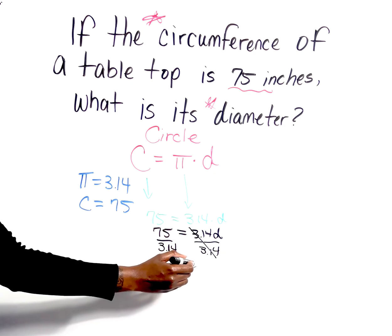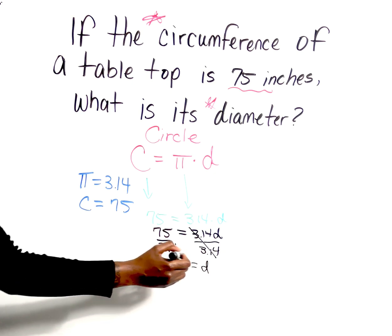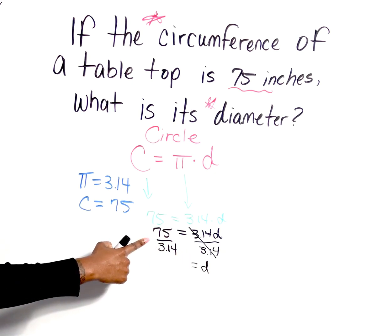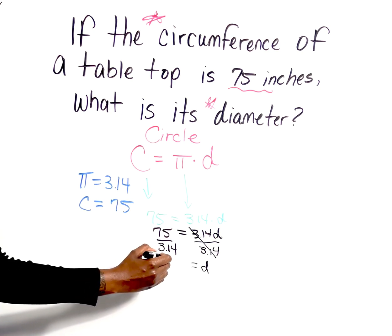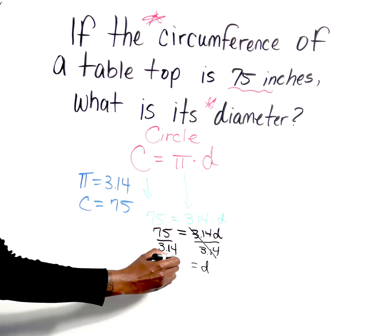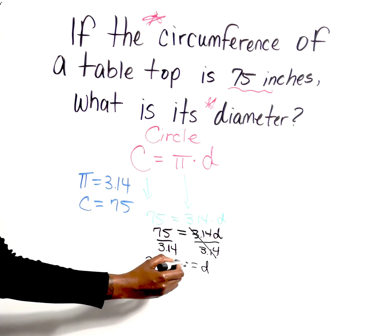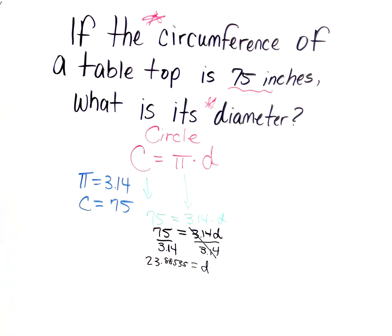So whenever you do one side, you always have to do the other side. So these are going to cancel out. And then 75 divided by 3.14 is going to give us a long decimal: 23.88535. This question specified that you need to round to the nearest tenth.